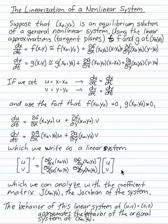And the behavior of this linear system at u, v equals zero, zero, the equilibrium point of the linear system, is going to approximate the behavior of the original nonlinear system at x naught, y naught.